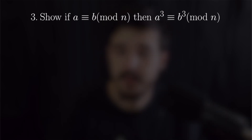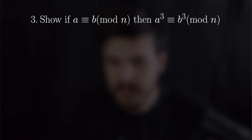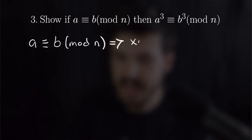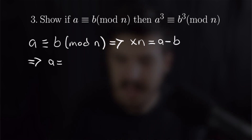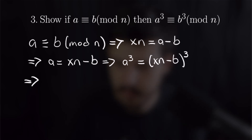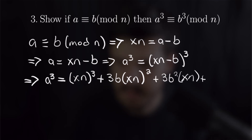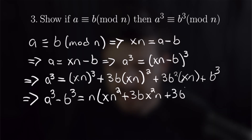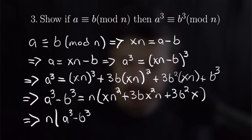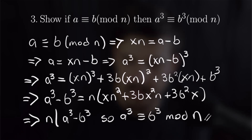For problem 3 we want to show that if a is congruent to b mod n, then a cubed is congruent to b cubed mod n. By definition we write xn equals a minus b, so a equals xn plus b. Cubing both sides gives a cubed equals (xn + b) cubed, which expands to (xn)³ + 3b(xn)² + 3b²(xn) + b³. Subtracting b cubed and factoring out n shows that n divides a cubed minus b cubed, so a cubed is congruent to b cubed mod n.